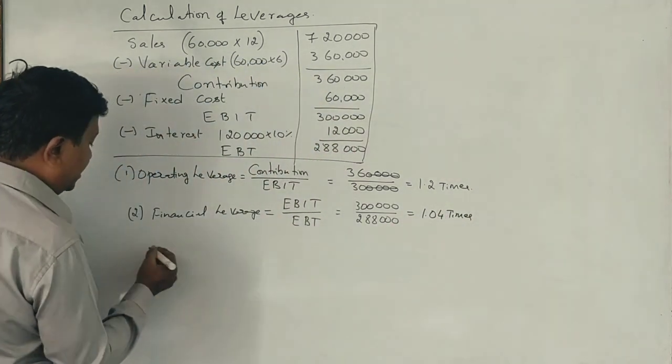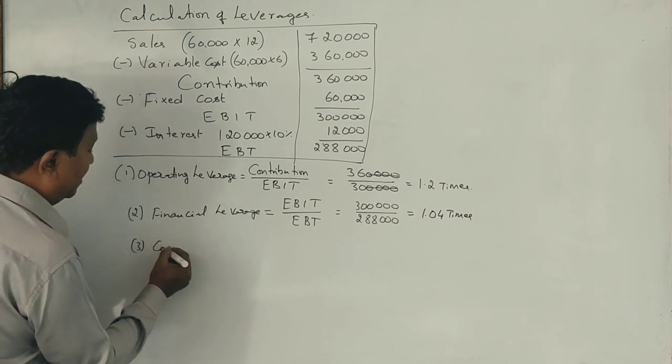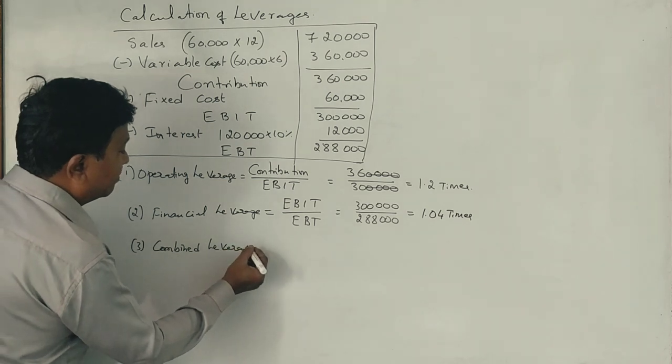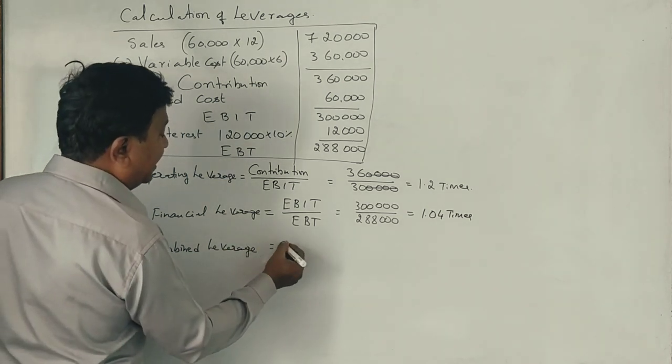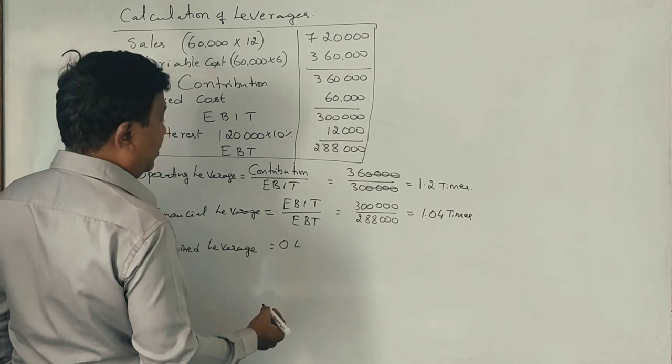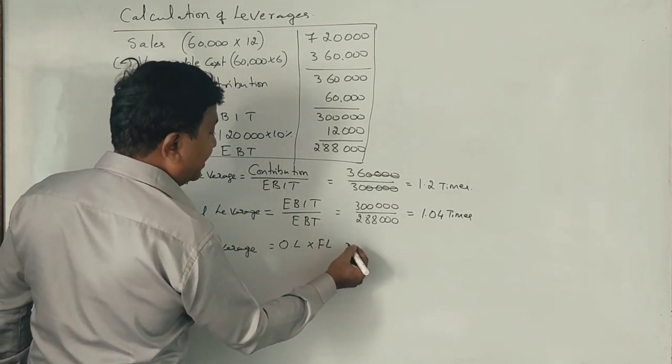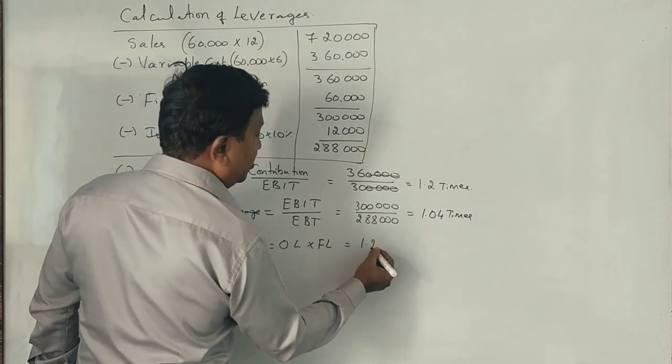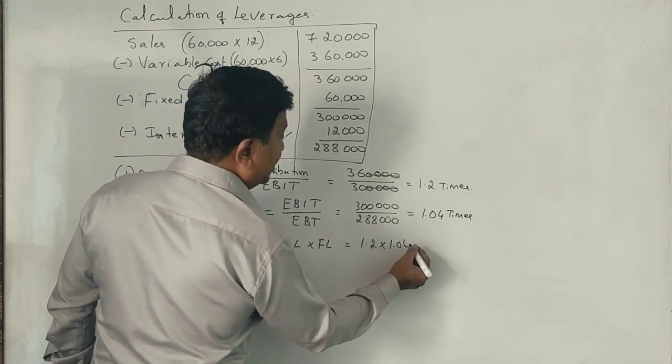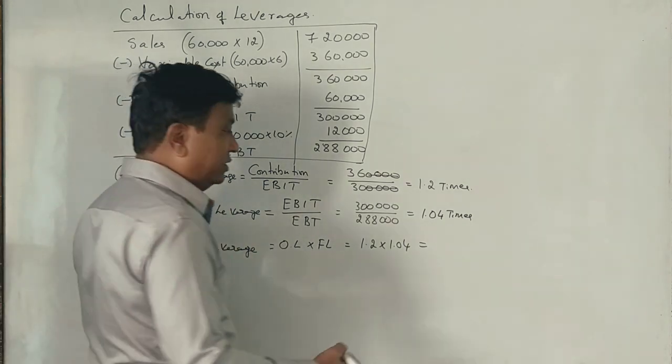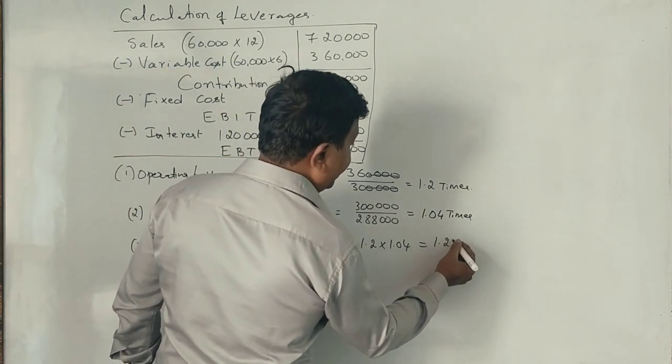Next, third one is combined leverage. Combined leverage formula is, what is that? Operating leverage into financial leverage, 1.2 into 1.04 is equal to how much? 1.25 times.